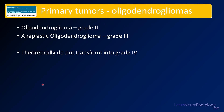Oligodendrogliomas — we talked about them in the classification lecture. These are primary brain tumors that are IDH-mutated and have 1p19q codeletion. They come in two grades: grade 2, the typical infiltrating oligodendrogliomas, and grade 3, or the higher-grade anaplastic oligodendrogliomas. These theoretically do not transform into grade 4 tumors. If they do, they may go back and check their histologic diagnosis and check some of the molecular features, but typically these should not become grade 4 tumors.